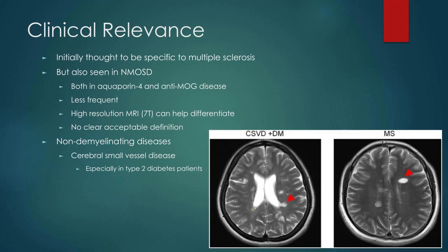Dawson's fingers are also seen in non-demyelinating diseases. We've all had the report that comes back saying 'cannot exclude demyelination' and then find out the patient has every vascular risk factor under the sun. It is seen in patients with small vessel disease, particularly those who also have diabetes. The scan on the left is actually a patient with small vessel disease and diabetes, which could look like a so-called Dawson's finger, compared to the patient on the right who has a diagnosis of MS.